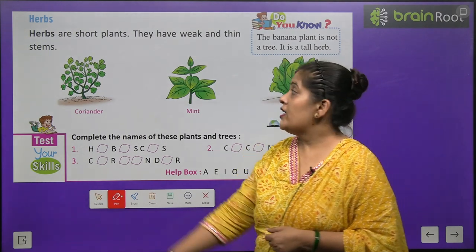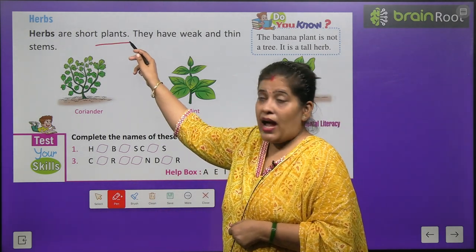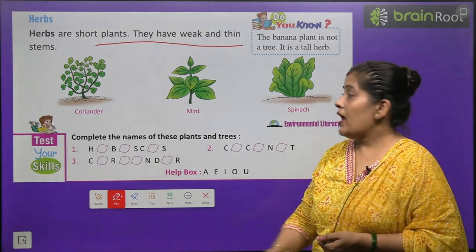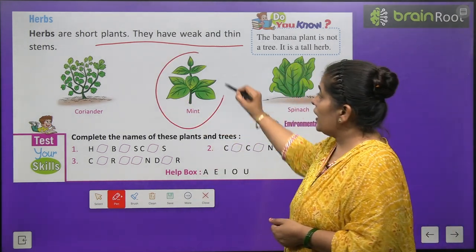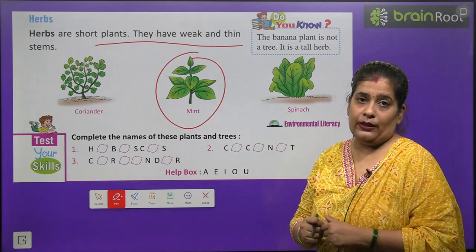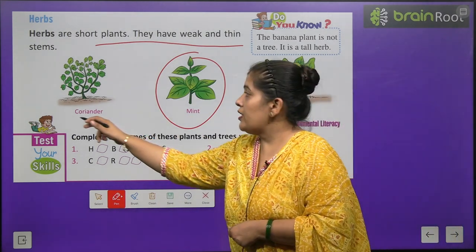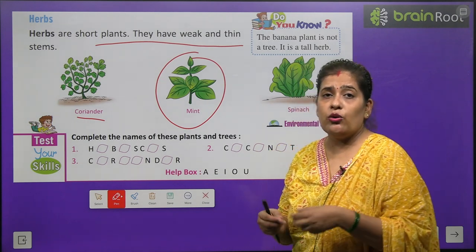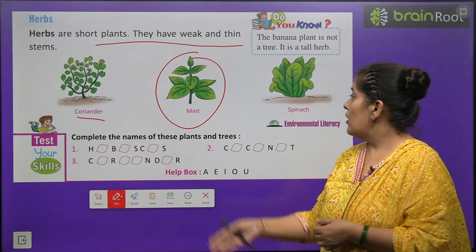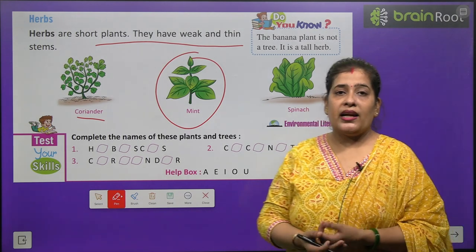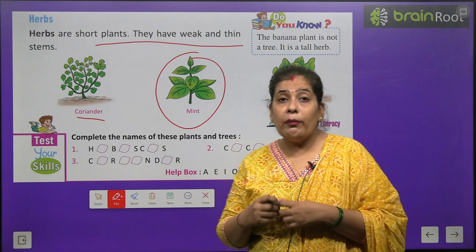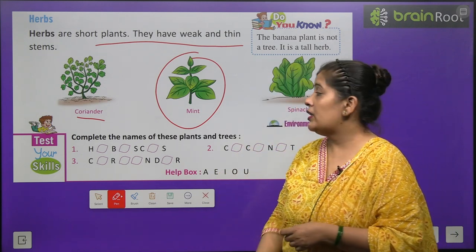Now we will learn about herbs. Herbs are short plants. They have weak and thin stems. Herbs chhote plants hote hain — weak matlab bahut kamzor hote hain aur patले hote hain. For example, coriander — coriander ko hum dhaniye kehte hain. Mint — pudina — and spinach — palak. Yeh hari hari hoti hain aur inki stem bahut komal aur thin hoti hai.